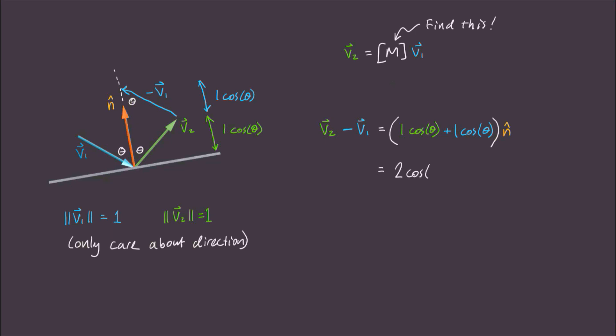Simplifying this, we get 2 cosine theta n. Bringing v1 to the other side yields this. And there we go. We've got an expression to work with that I'll call equation 1. Now we just need to simplify it by finding an expression for cosine theta.